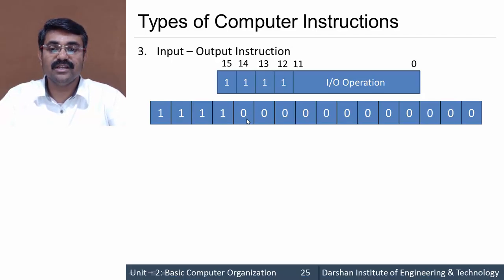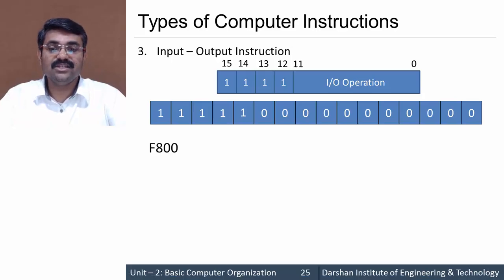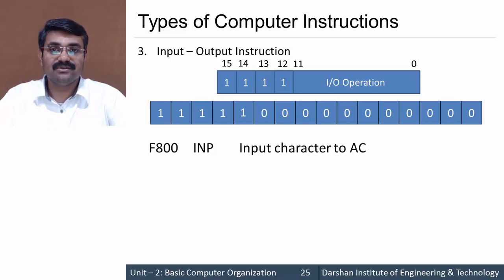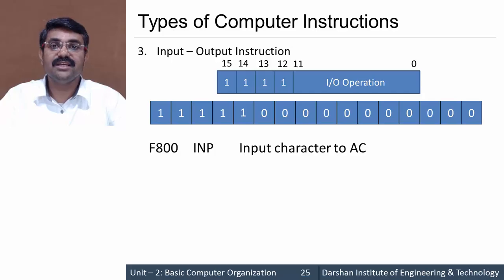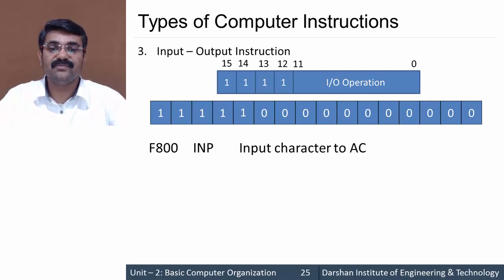The first I/O instruction: setting one bit gives hex code F800, designated as INP — input a character. This transfers the character from the input device to the INPR register, which then transfers it to the accumulator. So INP inputs a character and transfers it to AC.